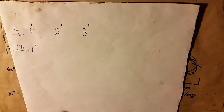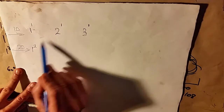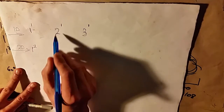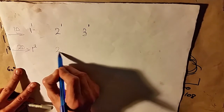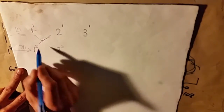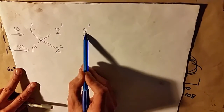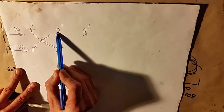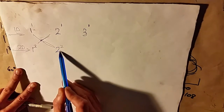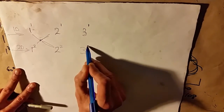As you move along there's a pattern going on. If we grab these three numbers and add them together, we should get four, or two squared. We can test it again: three plus two plus two squared equals nine, which is three squared.